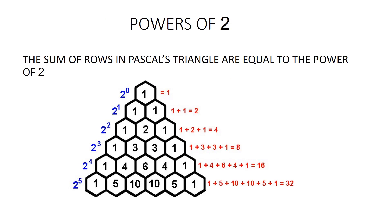Powers of 2. The sum of the entries in each row is a power of 2. For example, the sum of entries in the 0th row is 1, which equals 2^0. Similarly, in the first row, the sum of entries is 1 + 1, which equals 2, which is 2^1.